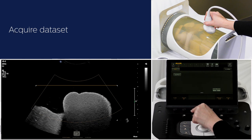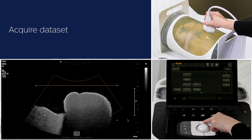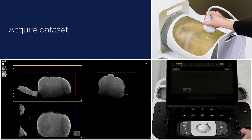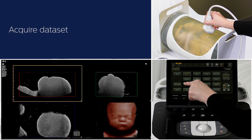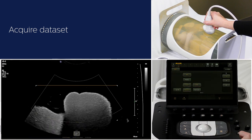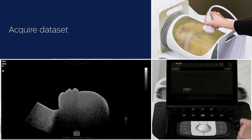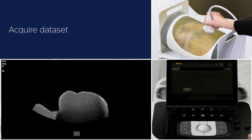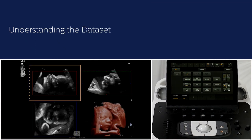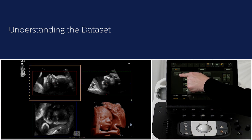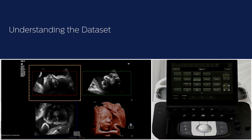Press start 3D on the touchscreen or the middle button above the trackball. Press stand by on the touchscreen or the middle button above the trackball if you want to reacquire the data set. On the monitor you see the sagittal, transverse and coronal plane of the fetal face as well as the volume image numbered from 1 to 4. To manipulate the data set at a later time, press save 3D on the touchscreen.